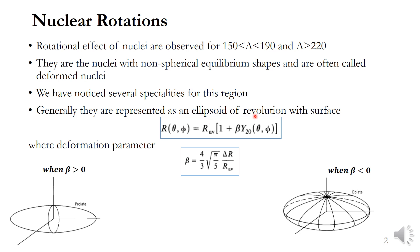Generally, nuclear rotations are represented as an ellipsoid of revolution with surface R(θ,φ) equal to R_average times (1 plus β times Y(θ,φ)), where R_average is the average nuclear radius given by R0 times A to the power 1/3. The parameter β is the deformation parameter, equal to (4/3)√(π/5) times ΔR over R_average, where ΔR is the difference between the semi-major and semi-minor axes of the elliptical shape. When β is greater than 0, it represents a prolate shape, and when β is less than 0, it represents an oblate shape.